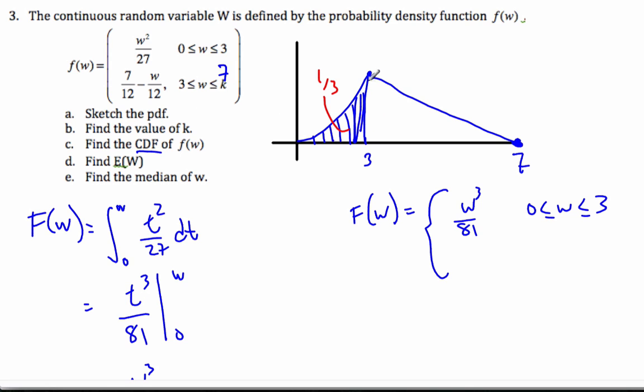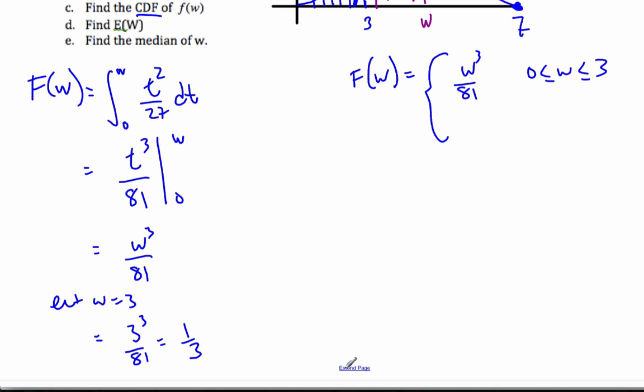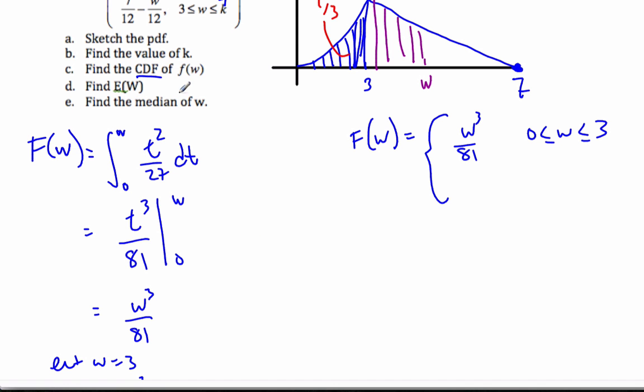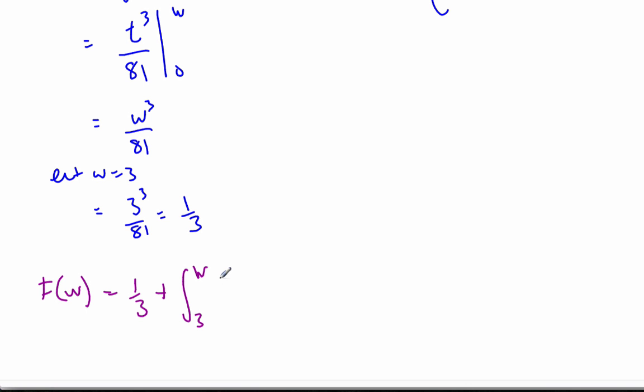So when I do the second part, which I'll do in purple, when I start to add this area here of the function, where this is some value W, I have to also include 1/3. So what happens now is I have to take 1/3 plus the integral from 3 to W of the second part, which is 7/12 minus t over 12 dt.